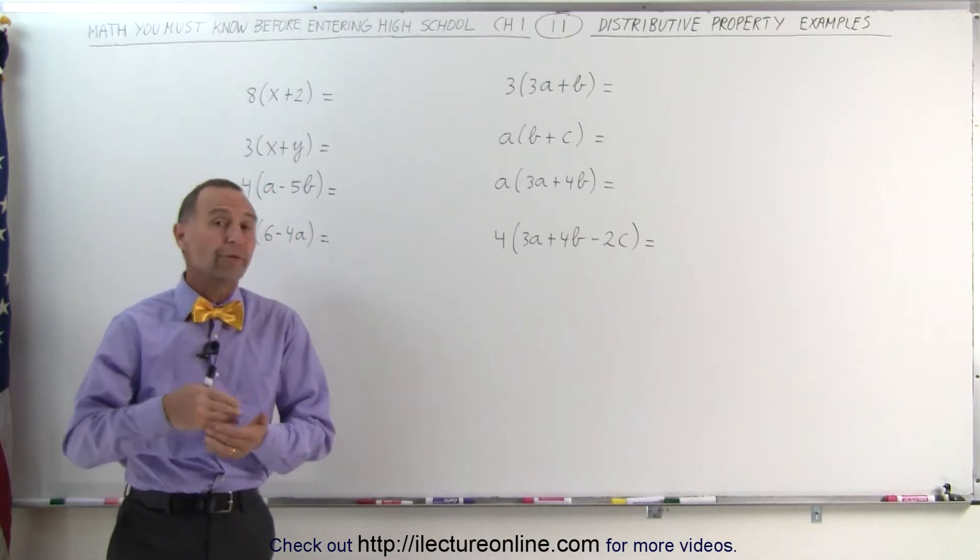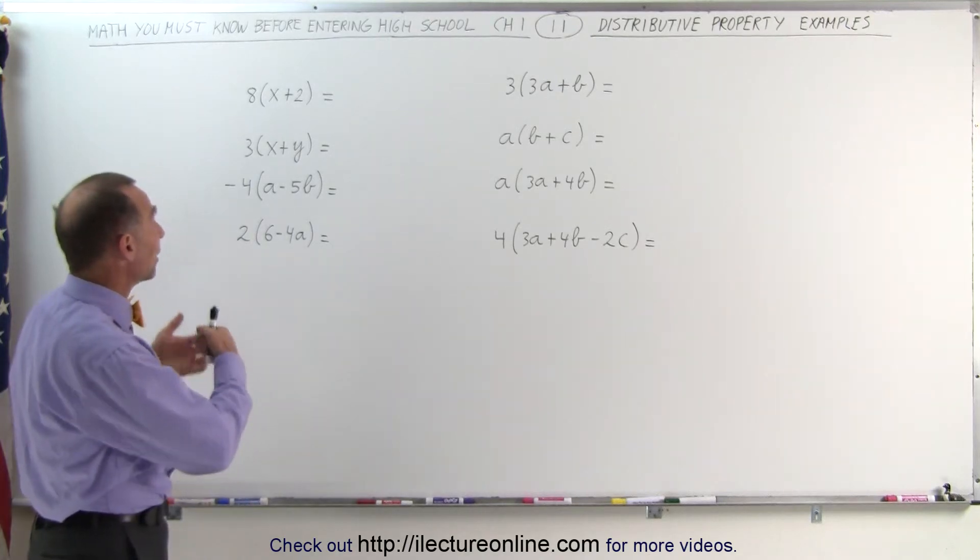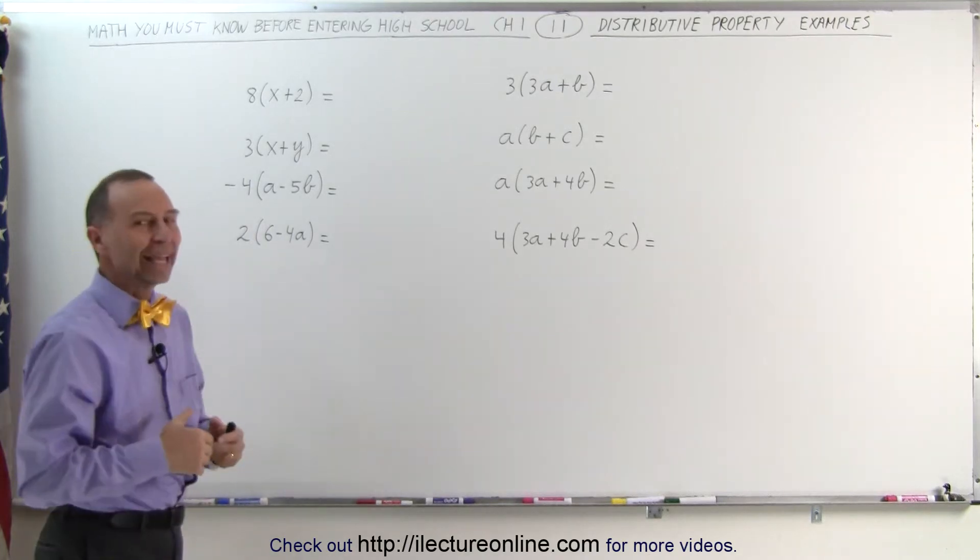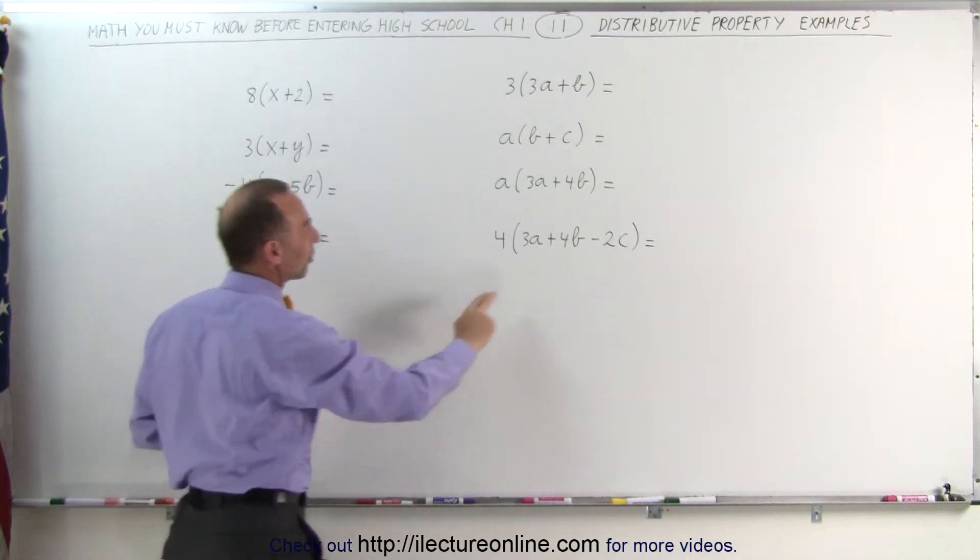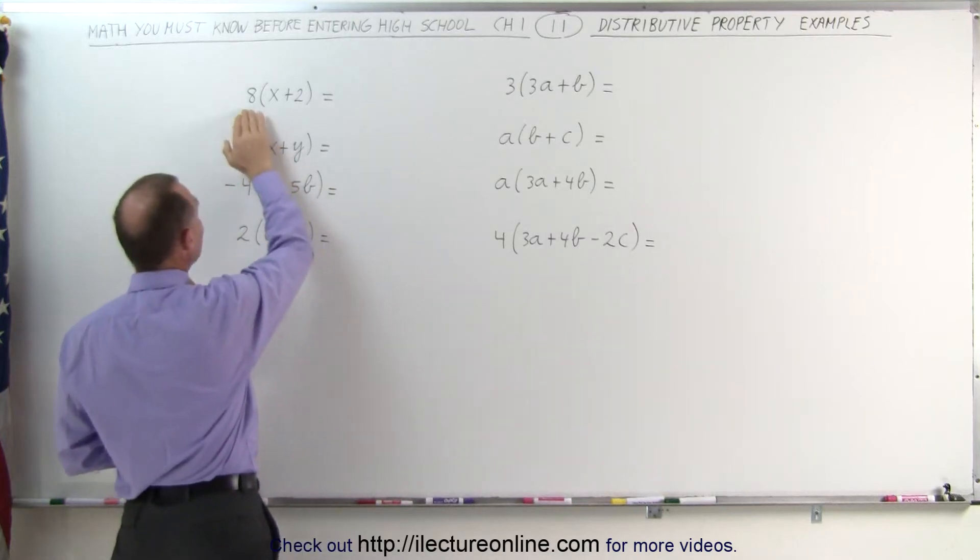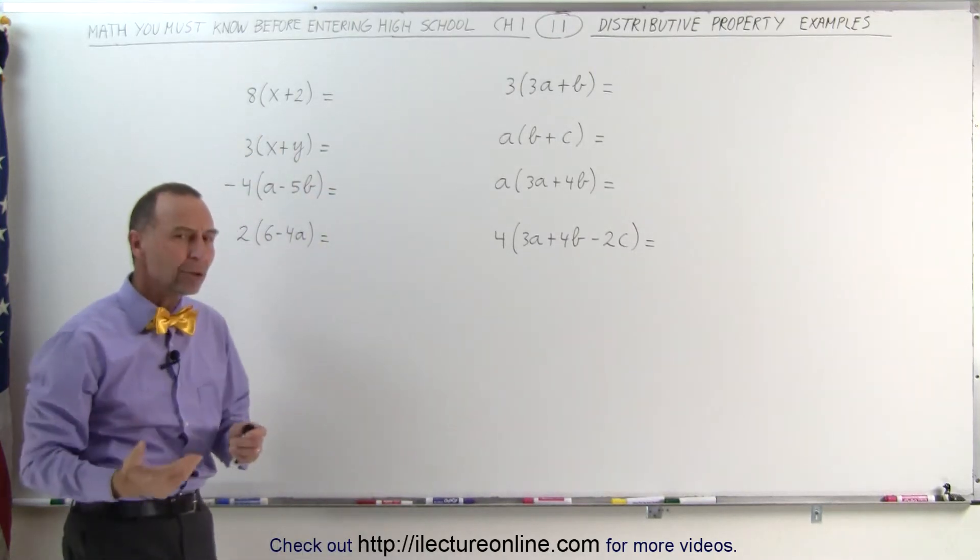When we're multiplying a number or a variable representing a number, and we multiply that times a binomial or a trinomial, a binomial is something that has two terms, a trinomial is something that has three terms. So here we're multiplying eight times this binomial, three times this binomial, and so forth. How do we do that?